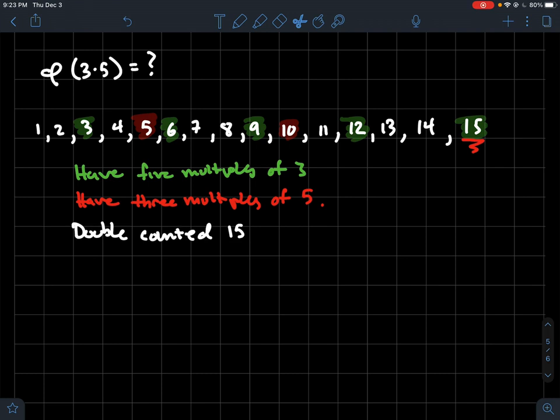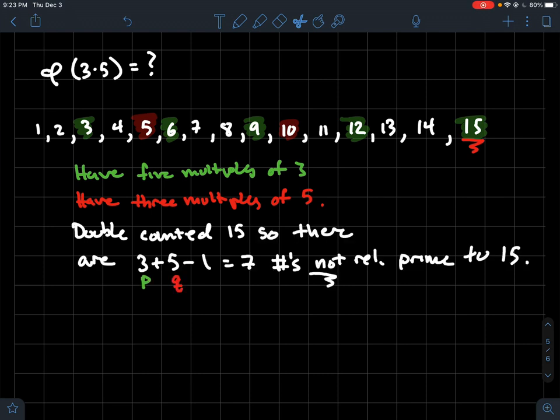So what happened though? Well, I double counted 15, right? 15 appears in both of those lists. So what are we going to do? Well, let's count how many numbers are not relatively prime to 15. And so those are my highlighted numbers. So there's 3 plus 5 minus 1, though, because I double counted 15 at the end. So 3 plus 5 minus 1 is 7. So there's 7 numbers that aren't relatively prime to 15.